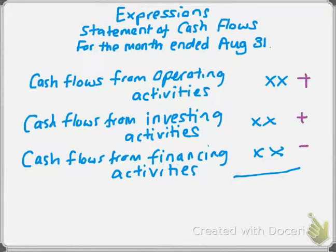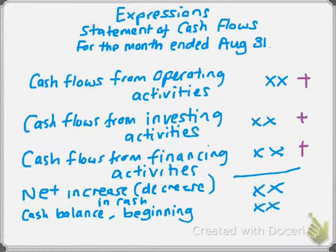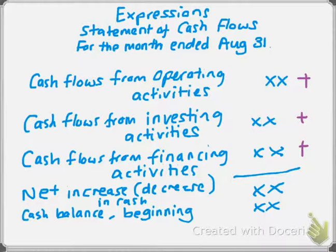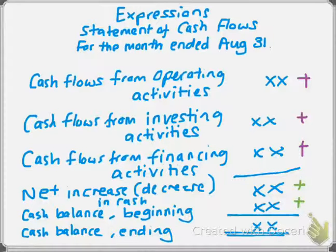Then we add those three numbers and come up with our net increase or decrease in cash. To that, we add our cash balance at the beginning of the period — we find that in our balance sheet at the beginning of the period, and we will talk about that later during the semester. Once we get that number, we add those two together and end up with the cash balance at the end of the period. I just want you to see the format of the statement; you do not need to worry about how to prepare it just yet.